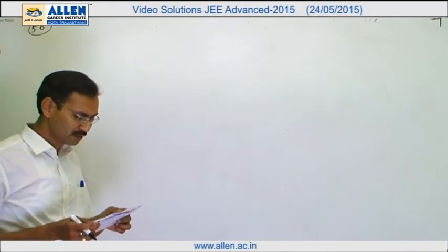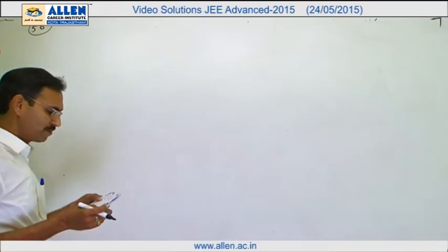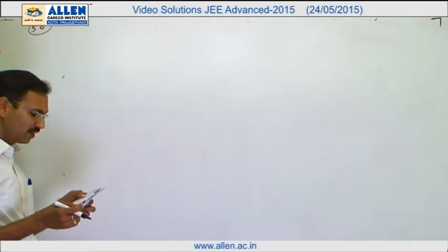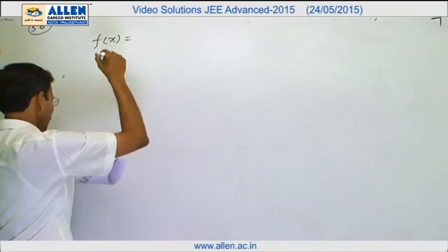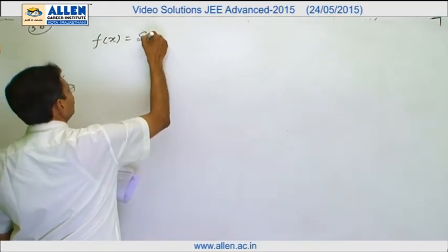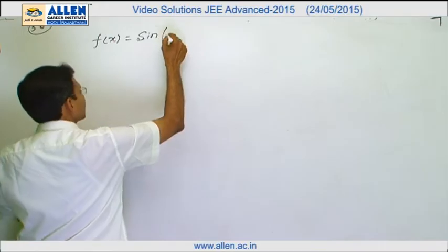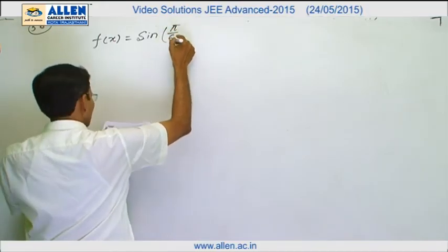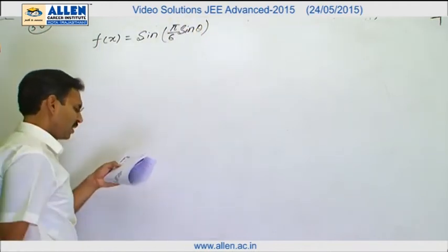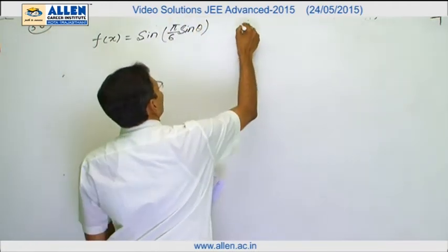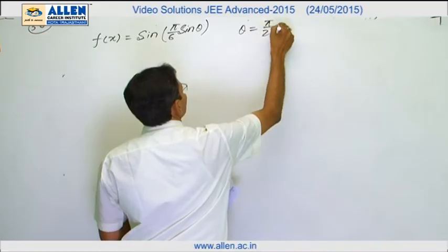Question number 56. We have to find the range of f(x) as asked in option a. f(x) is sine of pi by 6 sine theta, where by theta I mean to say pi by 2 sine x.